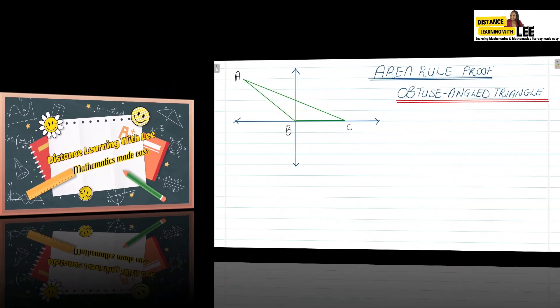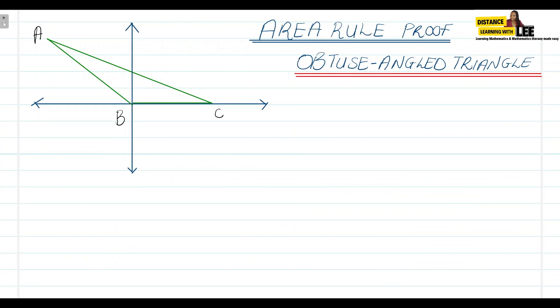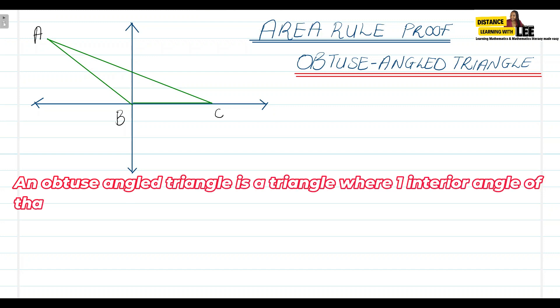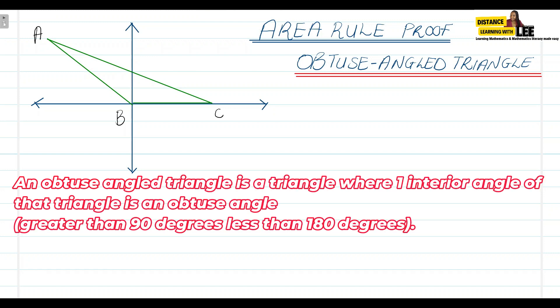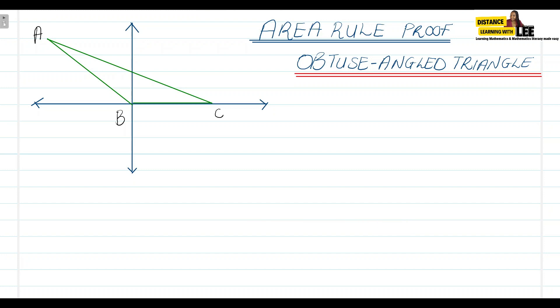In today's video tutorial we're going to be going through the area rule proof if you are given an obtuse angle triangle. Before we get started, it's very important that I go through what an obtuse angle triangle is. An obtuse angle triangle is a triangle where one of the interior angles is an obtuse angle. In this case we can already see that our angle B is our obtuse angle.